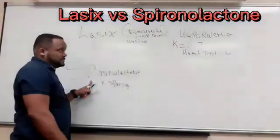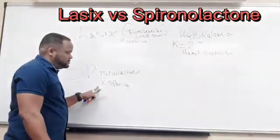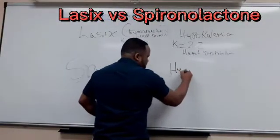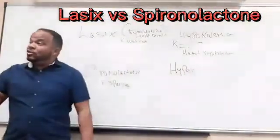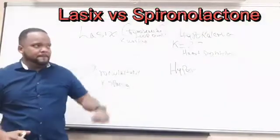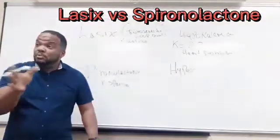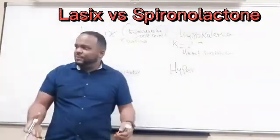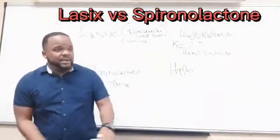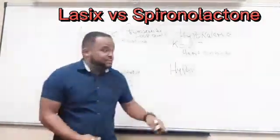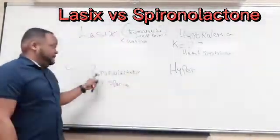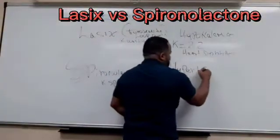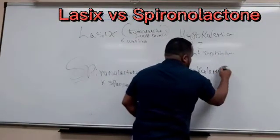Now, spironolactone is a potassium-sparing diuretic — it saves potassium. What is the patient at risk for now? Remember, when a drug does too much of its effect, it causes a problem. If it's a diuretic and removes too much fluid, the patient is at risk for dehydration. When it removes too much potassium, it causes hypokalemia. But if this one is a potassium-sparing diuretic, saving too much potassium would be a problem — that's hyperkalemia. The opposite.